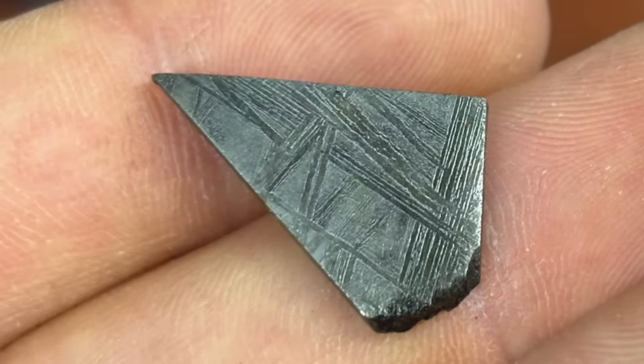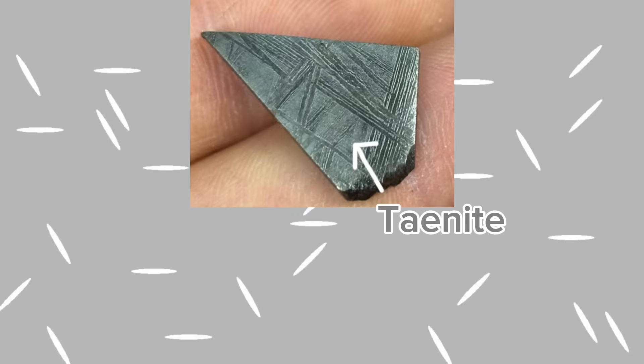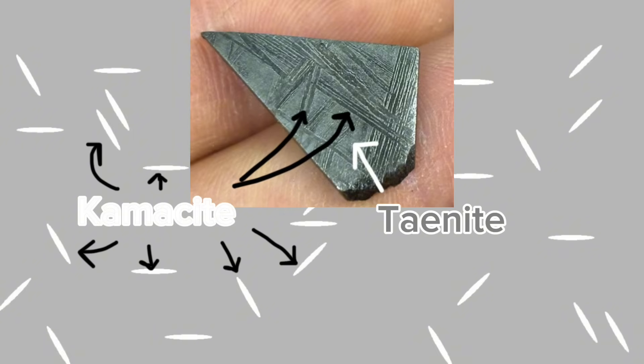Let's refresh ourselves on the formation of Wiedmannstatten in meteorites. This structure forms as a solid state phase transformation from taenite to kamacite. Iron nickel asteroids at high temperatures are almost all taenite but as they cool down very slowly the solubility of nickel in taenite decreases. So the nickel precipitates out in a new phase called kamacite. Now if we're cooling slowly enough this kamacite can grow in preferential growth directions and thus we get a beautiful Wiedmannstatten pattern.